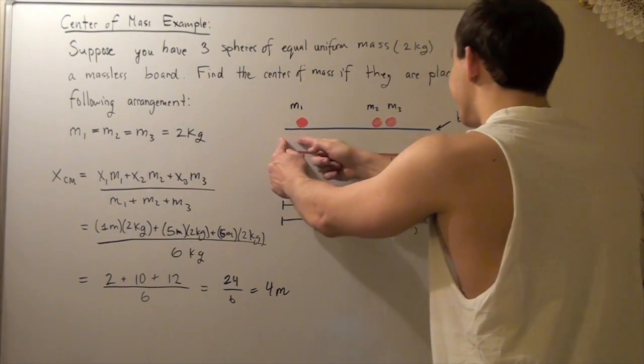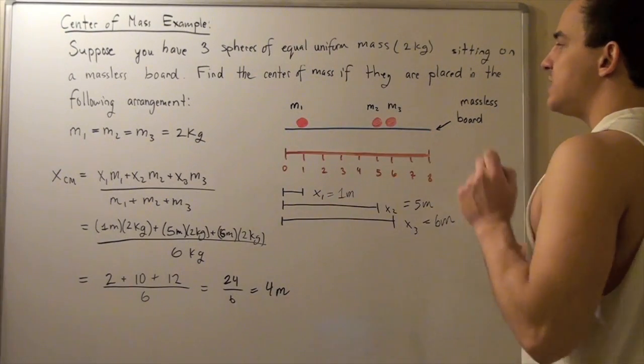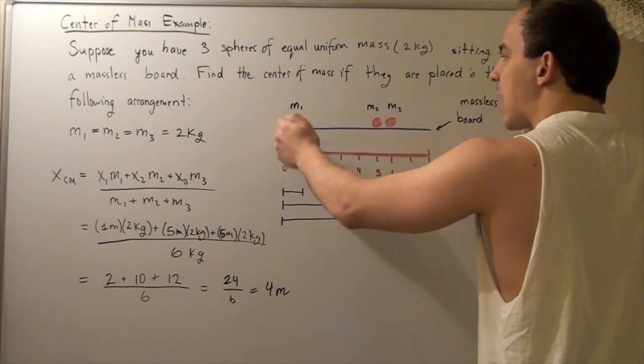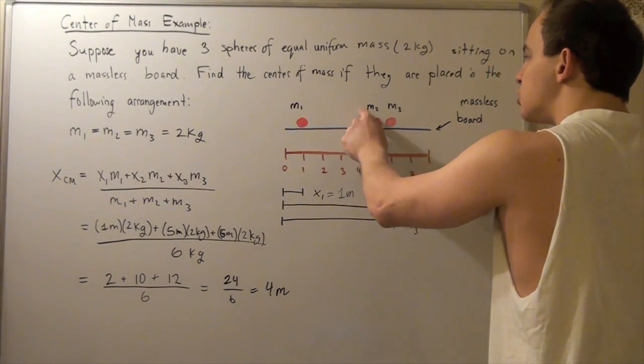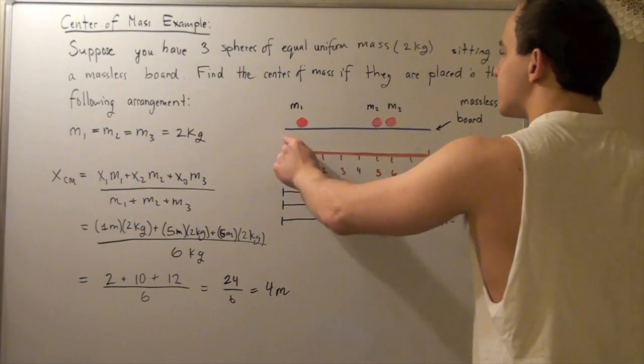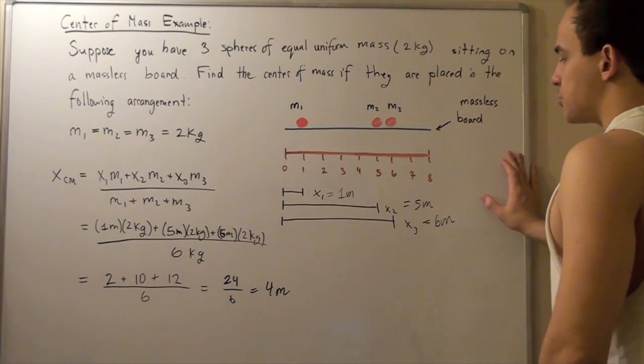So, suppose our board is eight meters long and we place mass number one one meter away from our beginning, our edge. We place mass number two five meters away from our edge and we place mass number three six meters away from our edge.